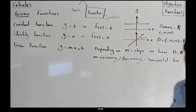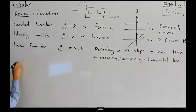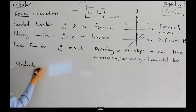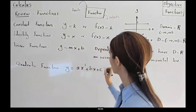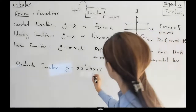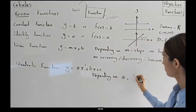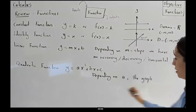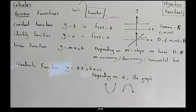Note that when we talk about functions, we do not consider the vertical line as a function. Then, the quadratic function has equation Y equals to AX squared plus BX plus C. Depending on A, the graph either opens up if A is positive, or opens down if A is negative. In either case, the domain is negative infinity to positive infinity, or R.